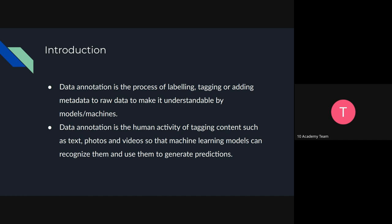Annotation is done by humans. We structure the data, label it, add tags or metadata to make it more descriptive. The more descriptive the data we pass to machine learning, the more reliable and accurate the model will be in answering user questions. That's exactly what we're doing when we annotate data — we add labels, tags, or metadata that makes the raw data more descriptive.